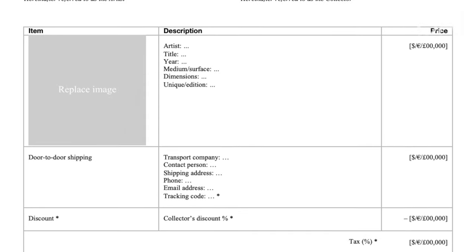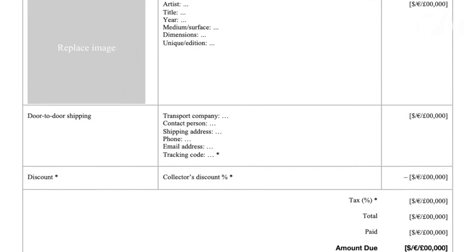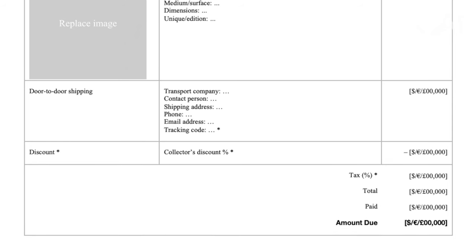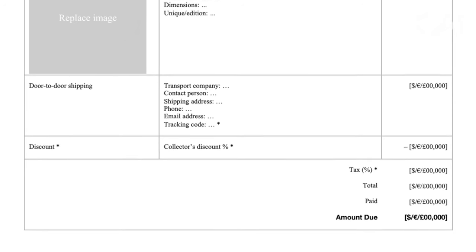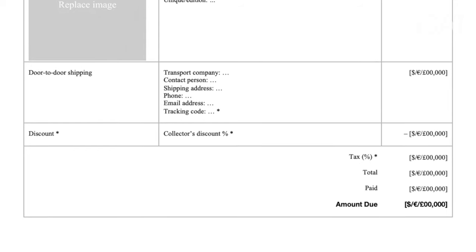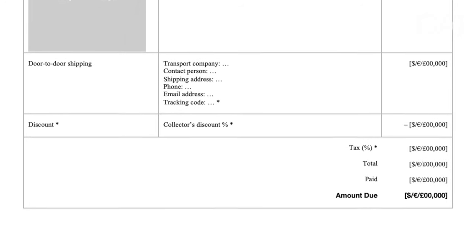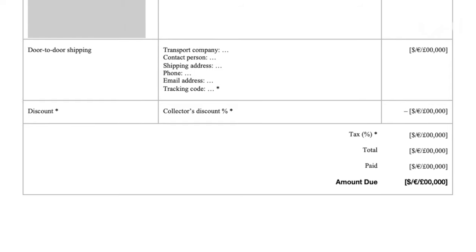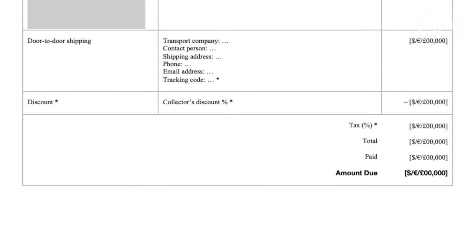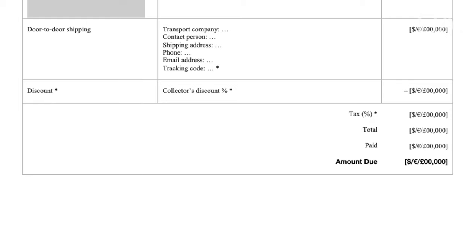Also indicate whether the artwork is unique or part of an edition. Additional items may include more artworks if they're purchasing more than one piece, door-to-door shipping, or a discount. Enter all prices — for artworks, shipping, and discounts — in the final column of the invoice table. In the bottom row, add tax costs if applicable, and calculate the total cost, mentioning any amount already paid as a deposit. If no deposit was received, enter zero, and at the very bottom in bold, show the amount that is due.